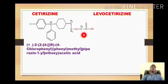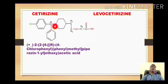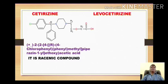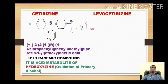So the name of cetirizine is: 2-[2-[4-[(4-chlorophenyl)phenylmethyl]piperazin-1-yl]ethoxy]acetic acid. This portion CH₂CH₂O is considered as ethoxy, and then the name of the basic nucleus is acetic acid. As mentioned, this compound is a racemic compound.